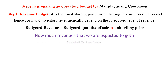Let me start from the first one: the revenue budget. On the revenue budget, we are trying to answer how much revenue we are expected to get. The unit price and budgeted units are multiplied together so that the budgeted revenue can be determined.